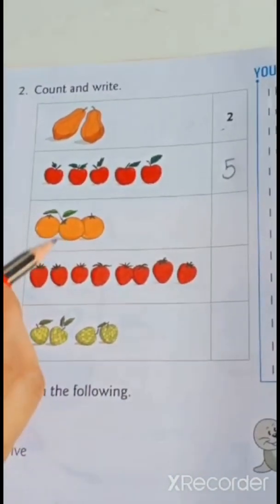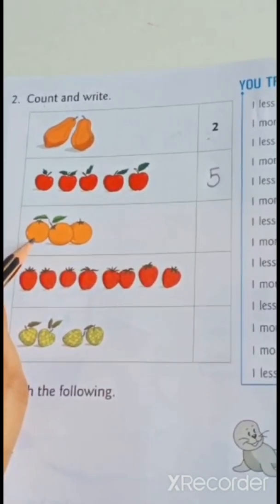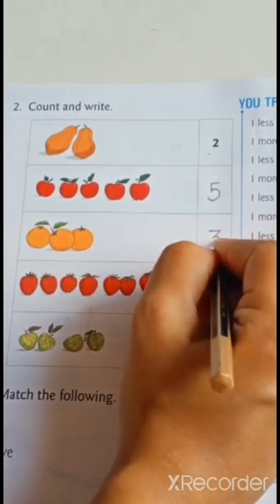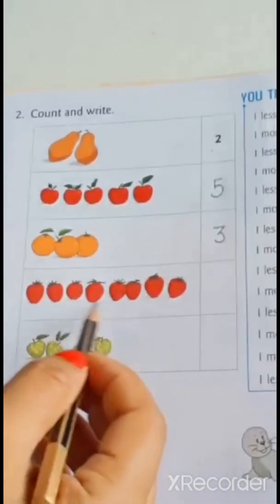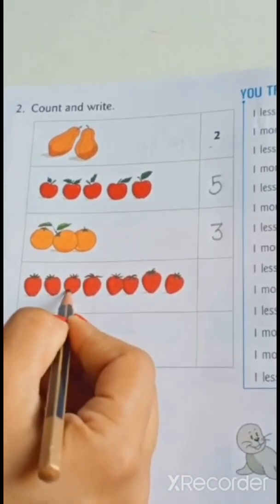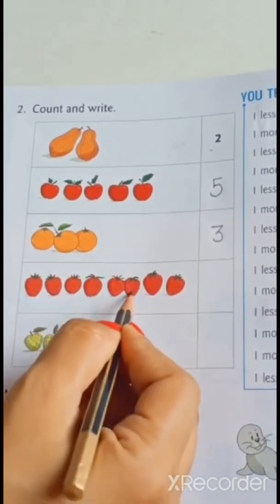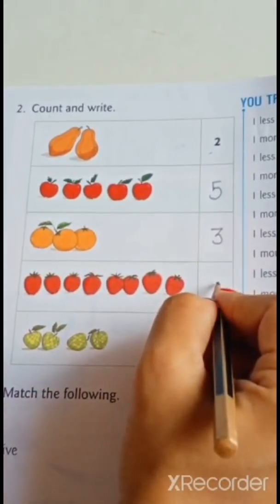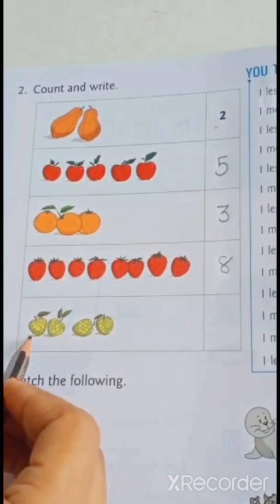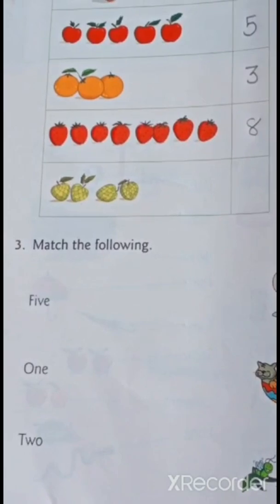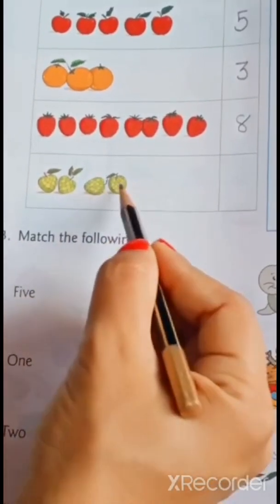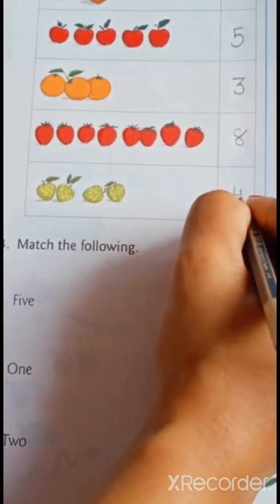Next. What is given? Oranges. Count. How many oranges are here? 1, 2, 3. So, write down here. 3. Next. What is given? Strawberries. Count. How many strawberries are here? 1, 2, 3, 4, 5, 6, 7, 8. So, what will be right here? 8. Write down here. 8. Next. What is given here? Next. What is given here? Custard apples. Count. How many? 1, 2, 3, 4. So, write down here. 4. Done.